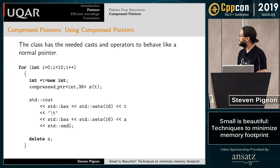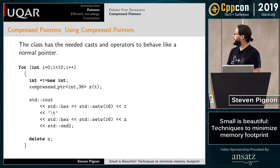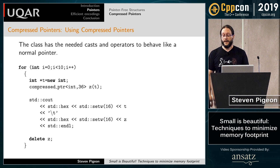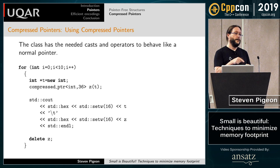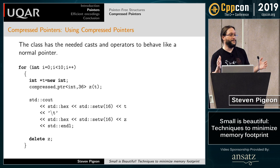It behaves exactly like a pointer. I create an int via new, create a compressed pointer with 36 bits — it aligns to five bytes — and I can use it exactly as a pointer, including calling delete on it, which will call delete with the decompressed value. This seems like a lot of work, but for pointer-rich data structures like a red-black tree, parent plus two sons now takes less space than two pointers — everything fits in 15 bytes instead of 24, at very little CPU cost.